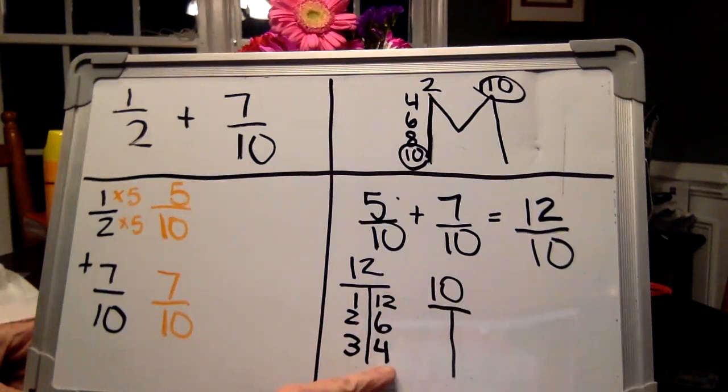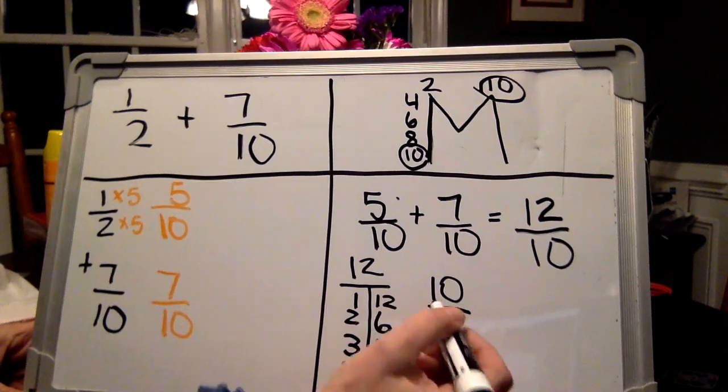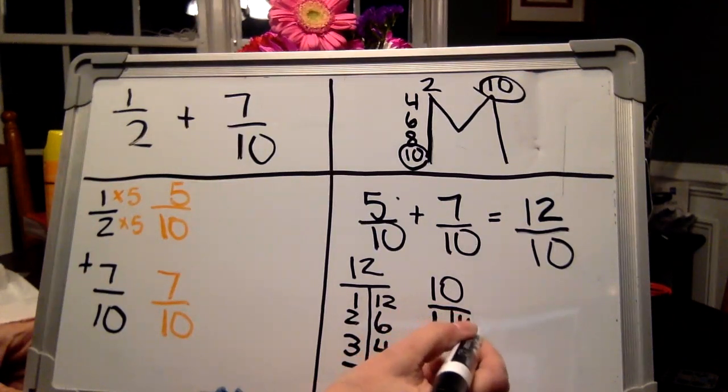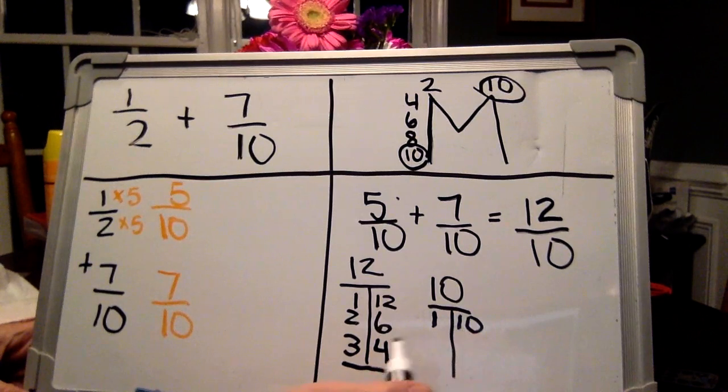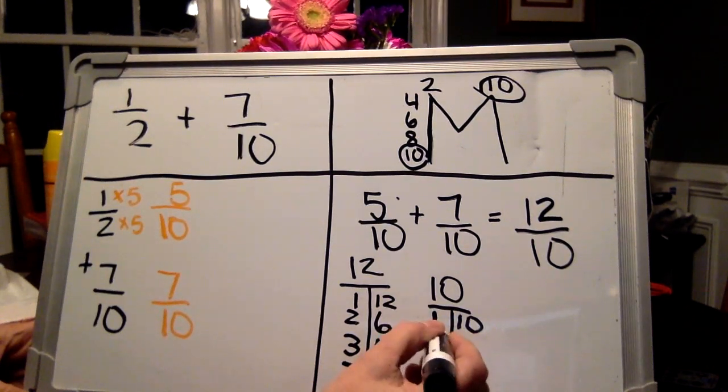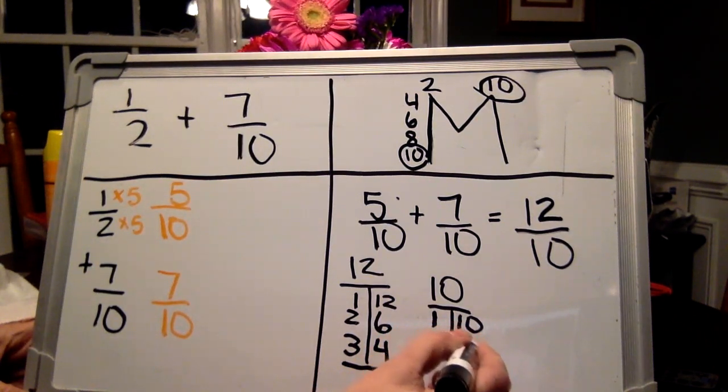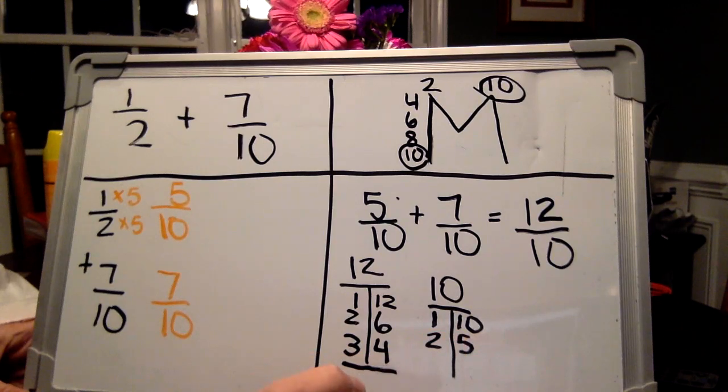And our next number would be four, so we know we're done. Let's do the factors for ten. Remember the BFFs. They have to be together. One and the number. One and ten. Two and five. Does three work? Nope. Does four work? Four, eight, nope. And five is here, so we know we're done.